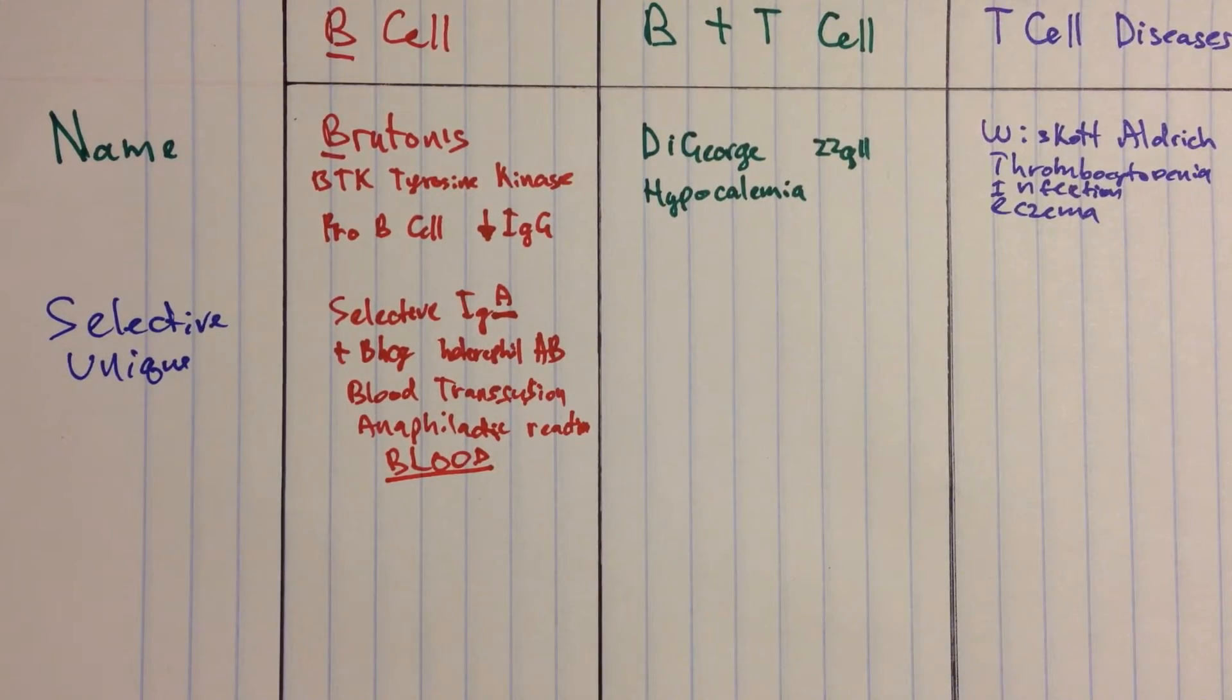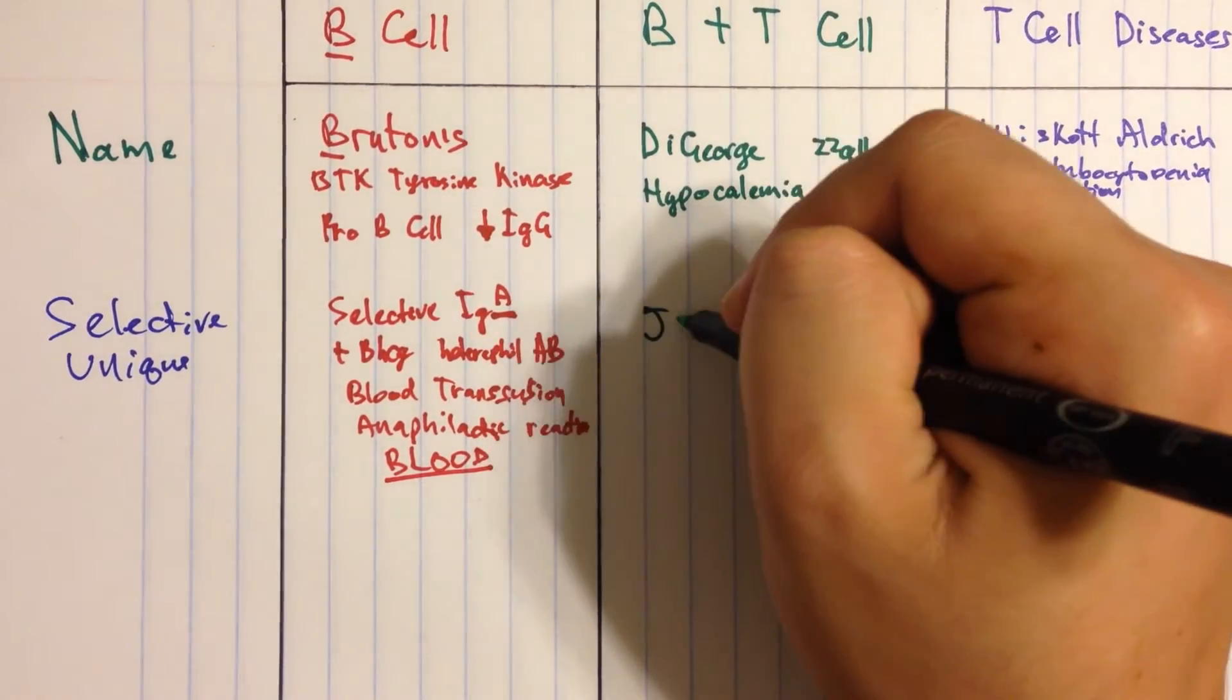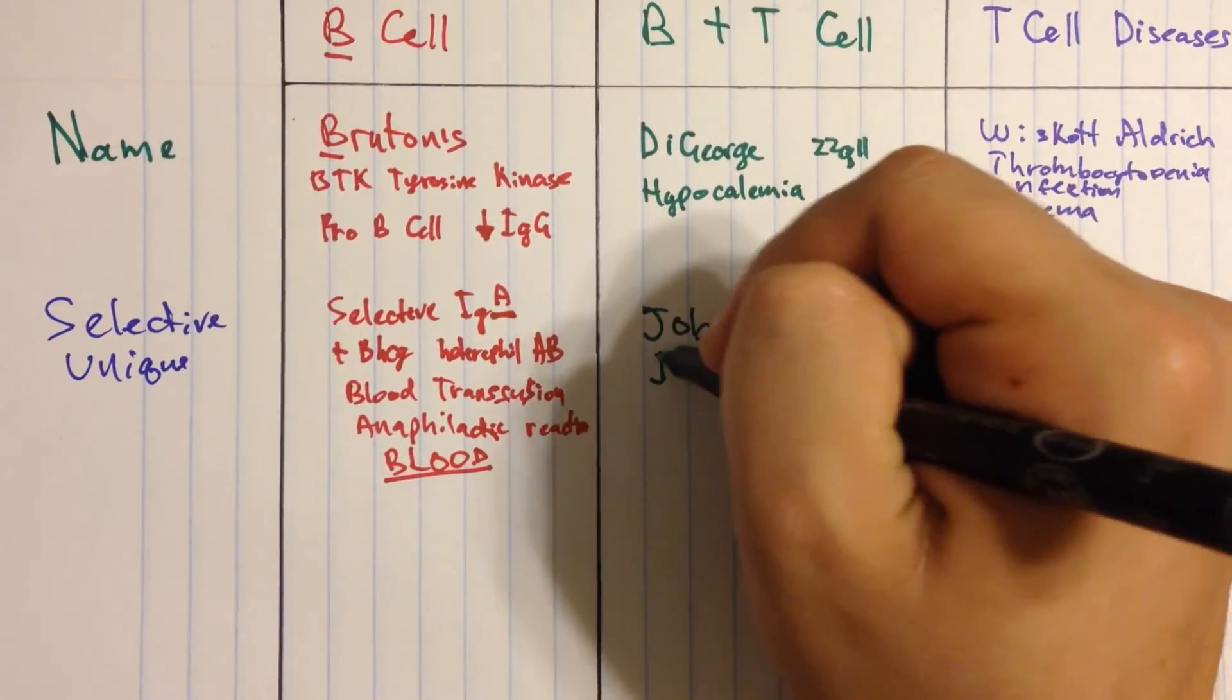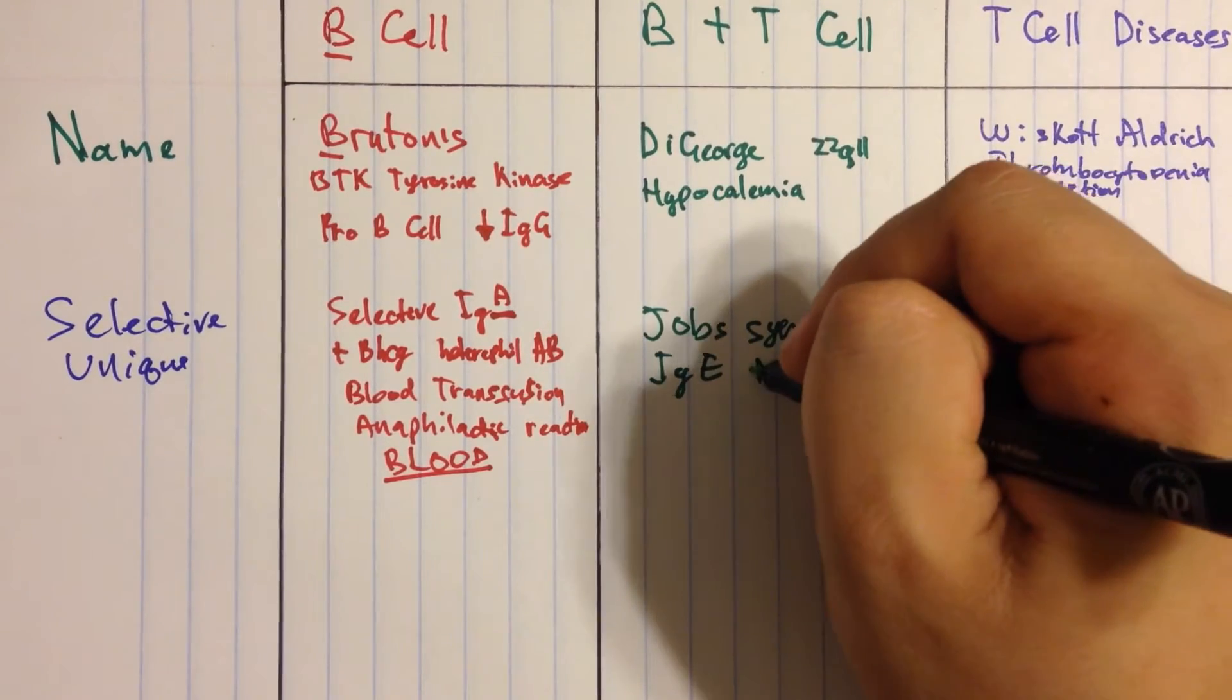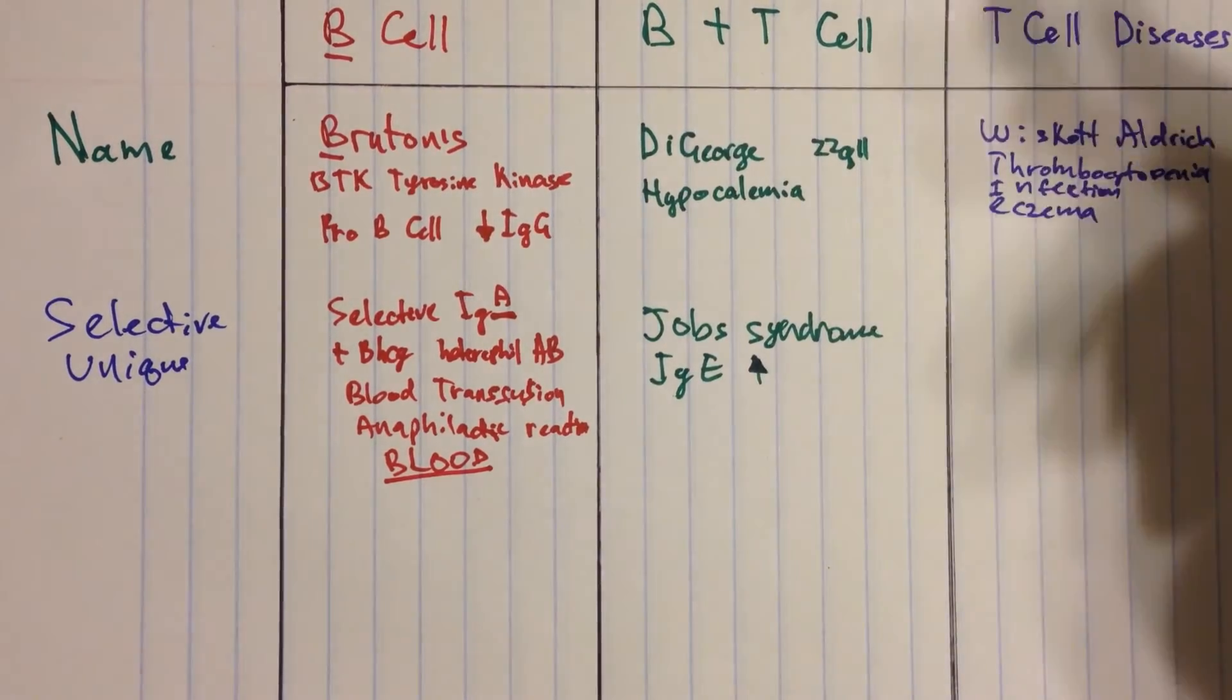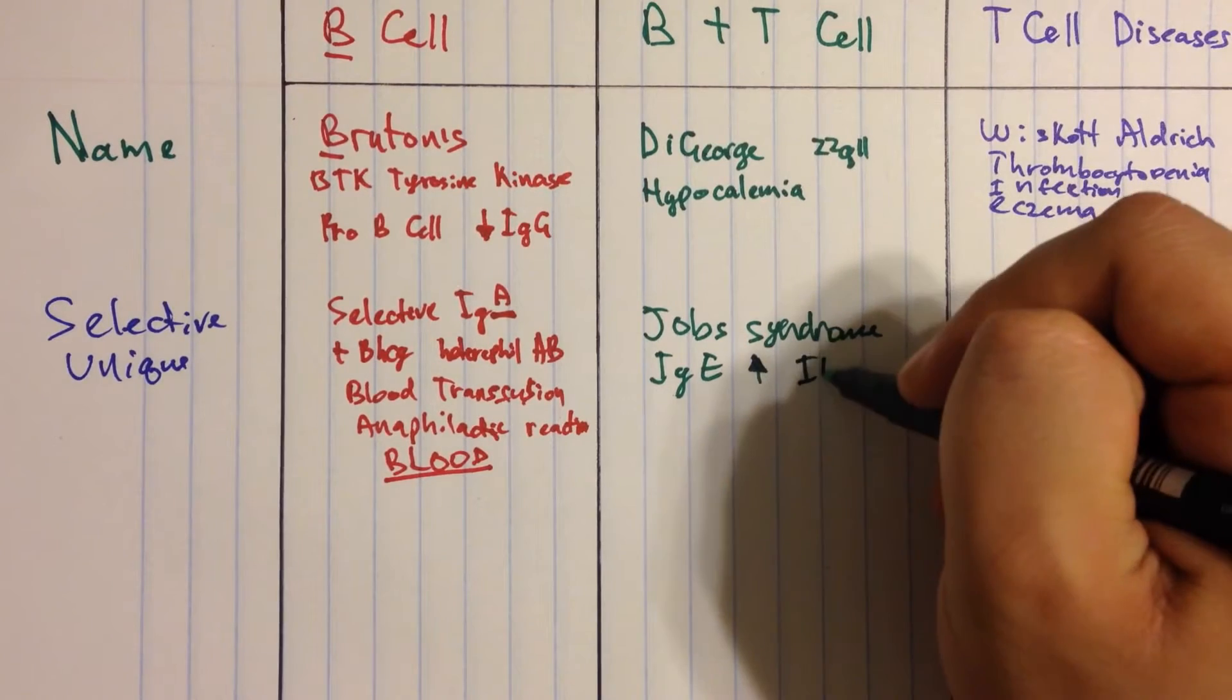Now, under B and T-cell problems, we're talking about Job's Syndrome. And when I say E, what I mean is IgE. And you have a lot of IgE. Now in order to make IgE, B cells produce interleukin-4 to make IgE, and we produce interleukin-4.